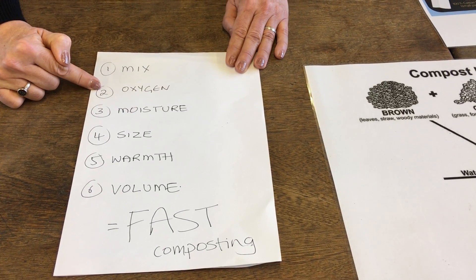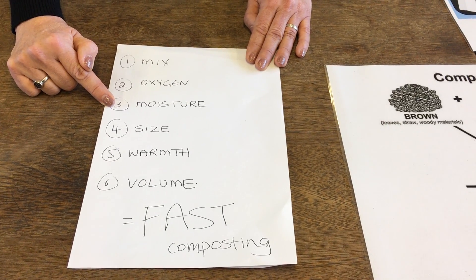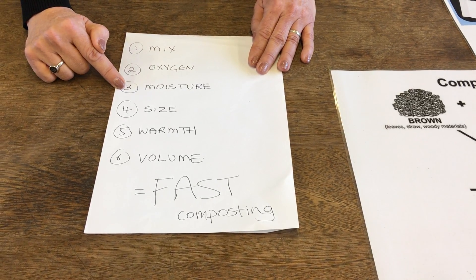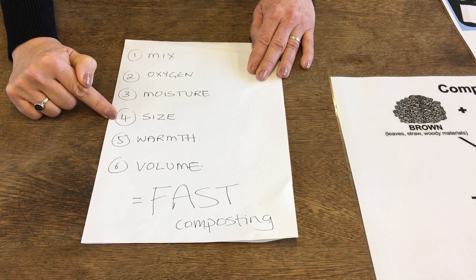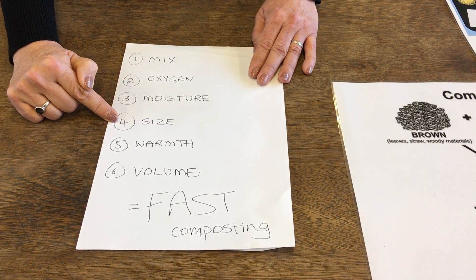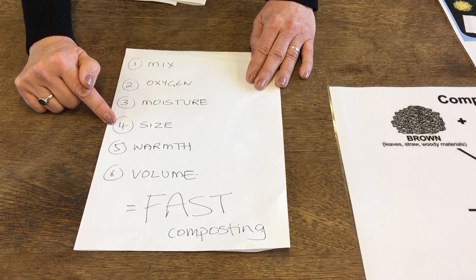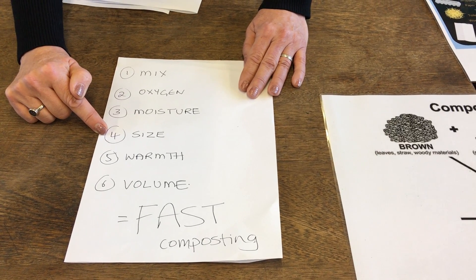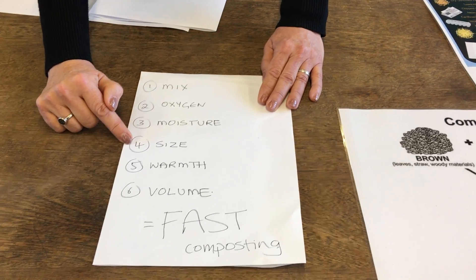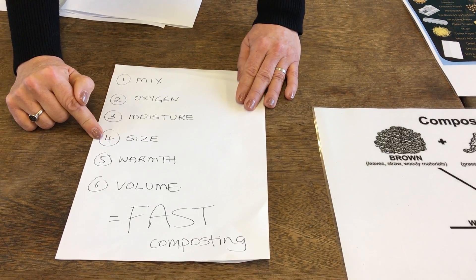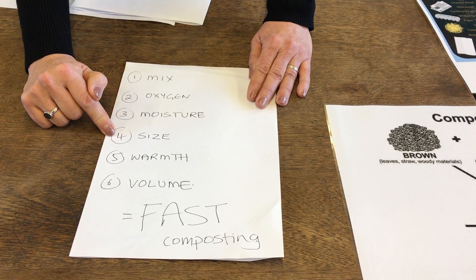A problem with some sealed containers is they don't let rain in, so the pile can become too dry and composting will stop. Hot composting also gives you compost faster due to the volume. The size of your ingredients matters too — chopping everything as small as you can lets the workers break it down as quickly as possible. For woody prunings, shredding them will really speed up the process.